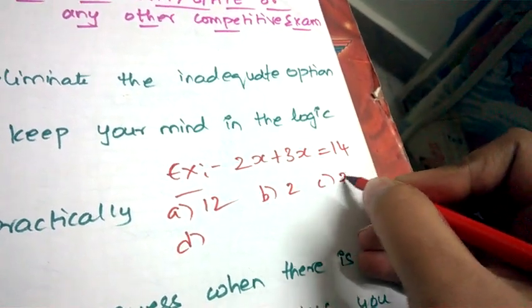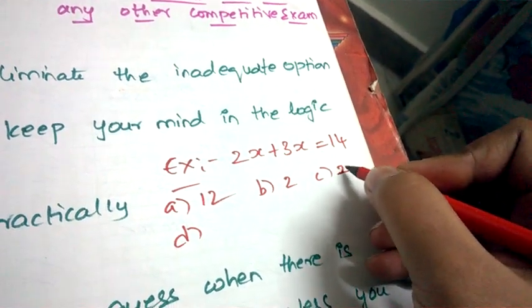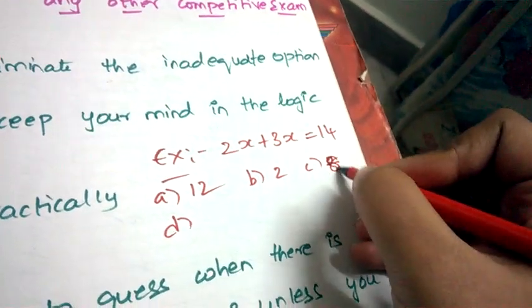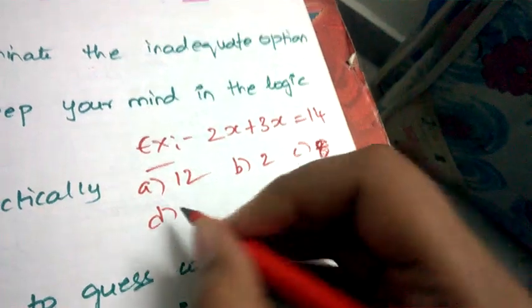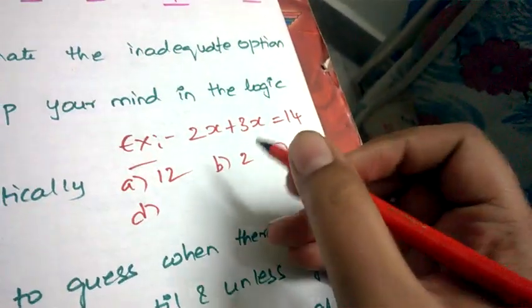Now I'm taking the options. Options are 12, 18 or 8, and some other option. So what you need to do is first try to eliminate the options.